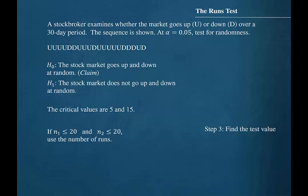Step 3 is to find the test value. If N1 is less than or equal to 20 and N2 is less than or equal to 20, then we should use the number of runs for the test value. If N1 or N2 is greater than 20, or if N1 and N2 are both greater than 20, we should use the Z formula. In this case, N1 and N2 are both less than 20, so we will use the number of runs. We found the number of runs, G, to be equal to 8.